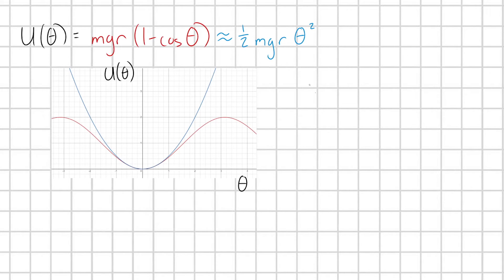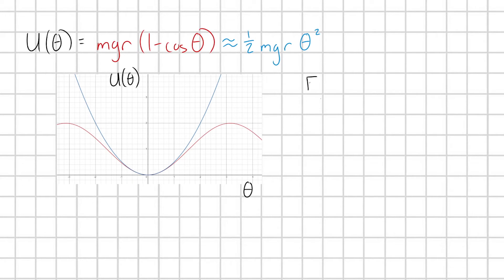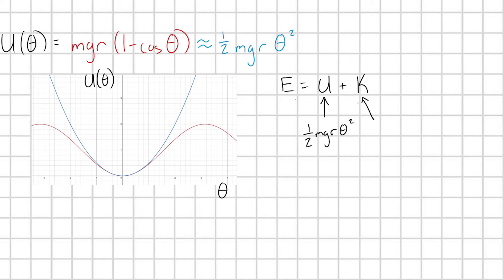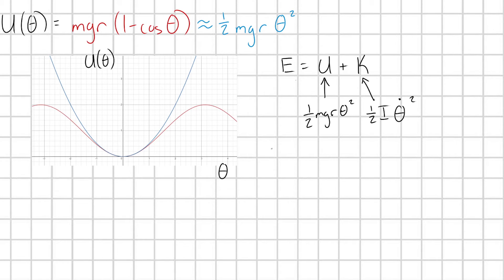What we're going to do is we're going to use the conservation of energy. So this is a conservative system. So I'll always be able to write out my total energy, E, as equal to a potential energy term plus a kinetic energy term. These guys here, U and K, they can change as my angle changes, but my total energy, E, is always going to be a constant. So we already know U. This is going to be one-half mgr theta squared. And our kinetic energy term, we have a rigid body rotating about a fixed axis. So its kinetic energy is going to be one-half times its moment of inertia I times its angular velocity theta dot squared. So let me just go ahead and plug that in real quick. So I have E is equal to one-half mgr theta squared plus one-half I theta dot squared.